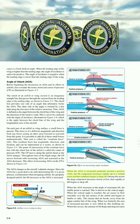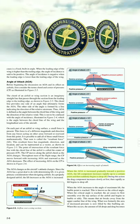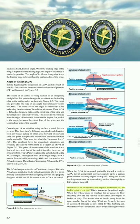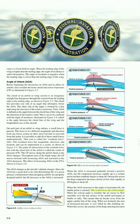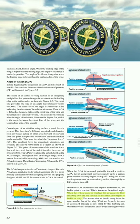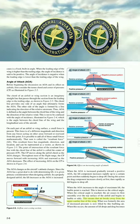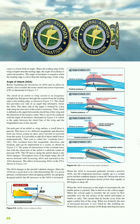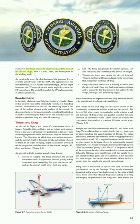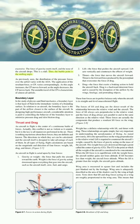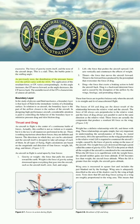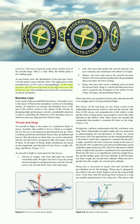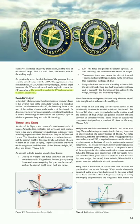When the AOA is increased gradually toward a positive AOA, the lift component increases rapidly up to a certain point and then suddenly begins to drop off. The drag component increases slowly at first, then rapidly as lift begins to drop off. When the AOA increases to the angle of maximum lift, the burble point is reached — this is known as the critical angle. When the critical angle is reached, the air ceases to flow smoothly over the top surface and begins to burble. Air breaks away from the upper camber line of the wing, and what was formerly the area of decreased pressure is now filled by this burbling air. The amount of lift drops and drag becomes excessive. The force of gravity exerts itself, the nose of the aircraft drops, and this is a stall. The burble point is the stalling angle. As the AOA increases, the CP moves forward; as the angle decreases, the CP moves back. The unstable travel of the CP is characteristic of almost all airfoils.